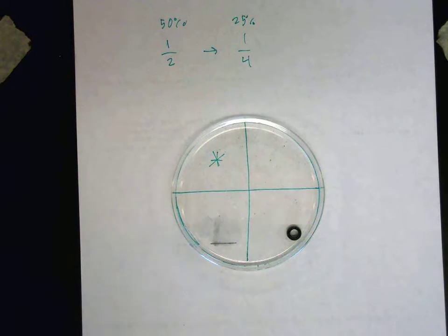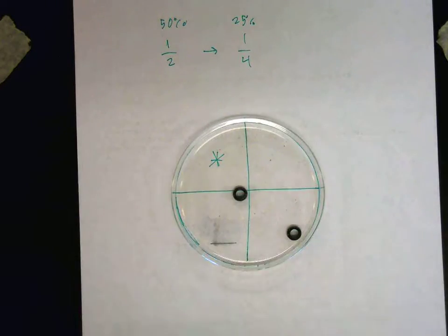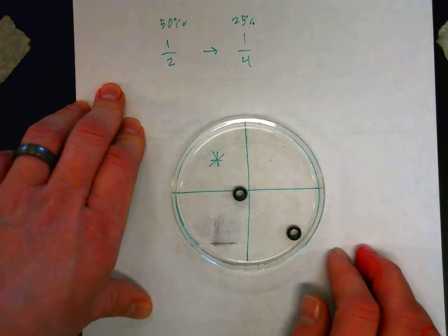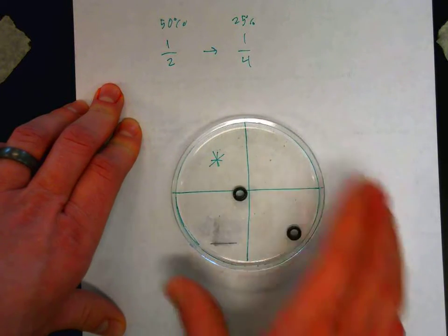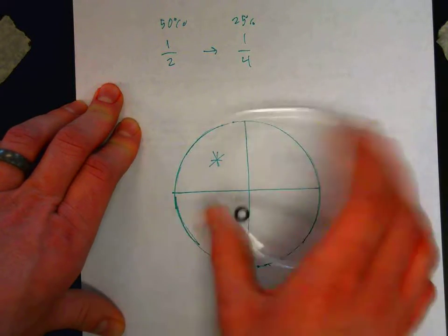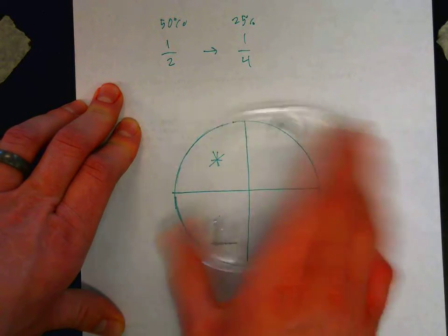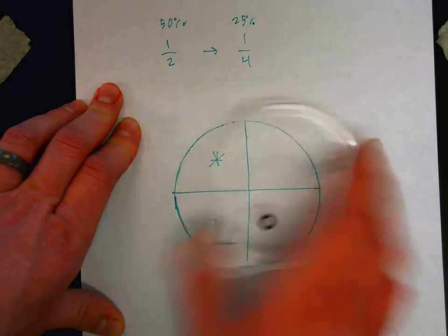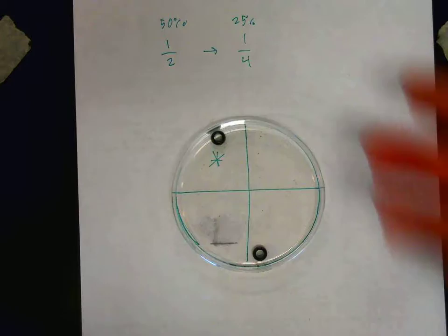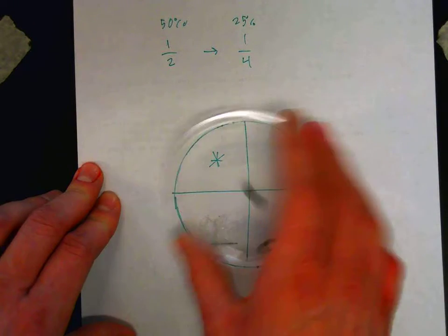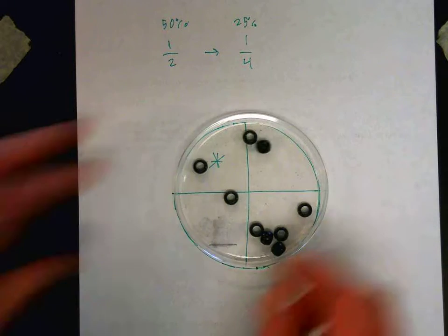But there's another factor as well, the number of beads. So if I put two beads in there, how likely is it that both of them will end up in one quarter? Oh, I got one of them. It's likely to end up, so the likelihood that both will end up in one square becomes even less likely.